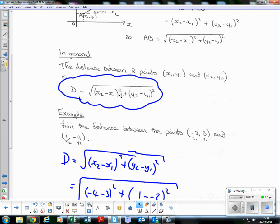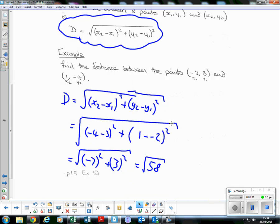√[(x₂ - x₁)² + (y₂ - y₁)²]. Let's look at an example: Find the distance between the points (-2, 3) and (1, -4). If you want to make it foolproof, write x₁, y₁, x₂, y₂ underneath. So the distance D equals the square root of (x₂ - x₁)² plus (y₂ - y₁)². That's just the distance formula. Substitute in our values: